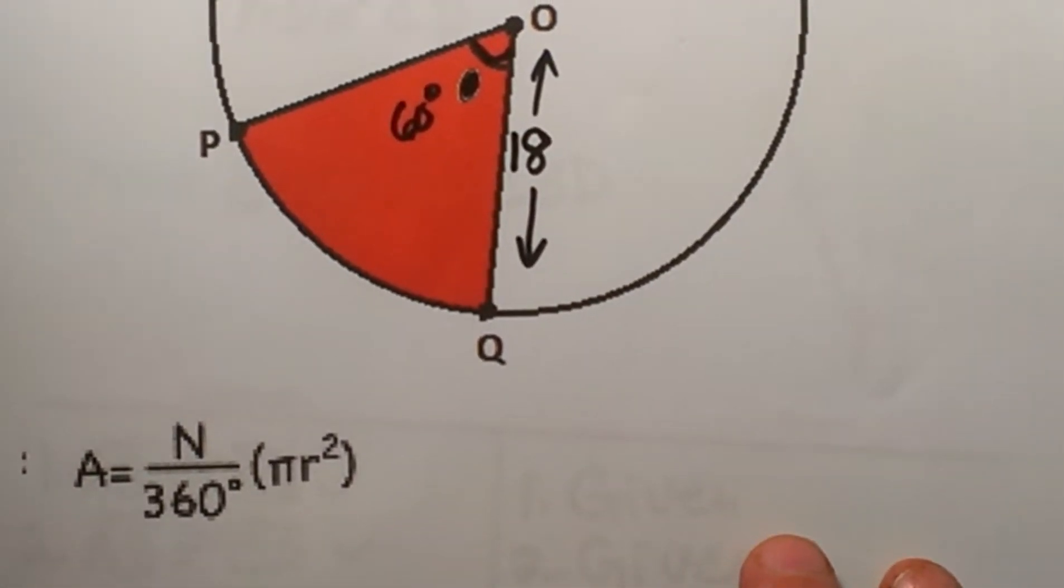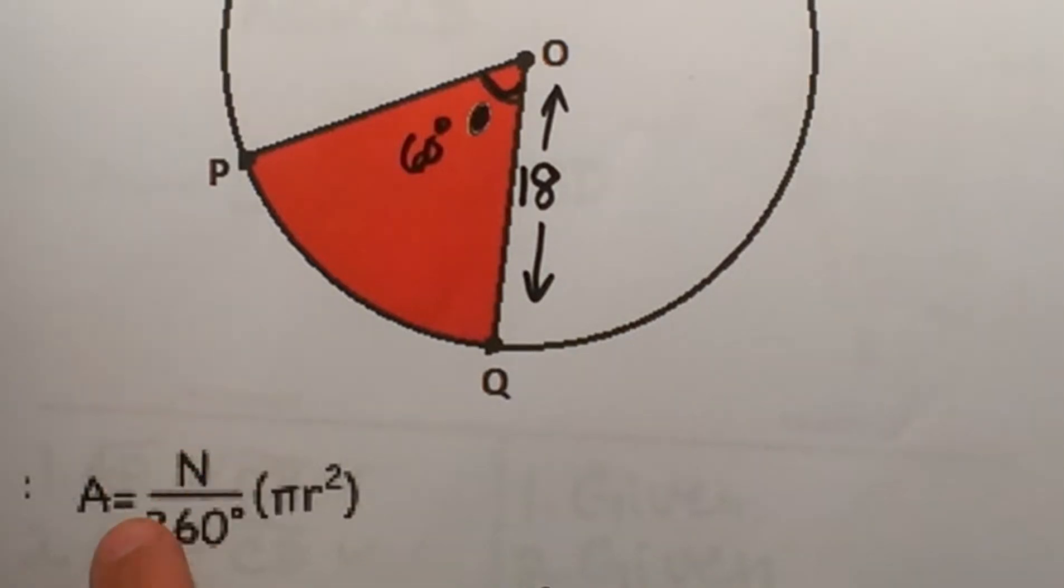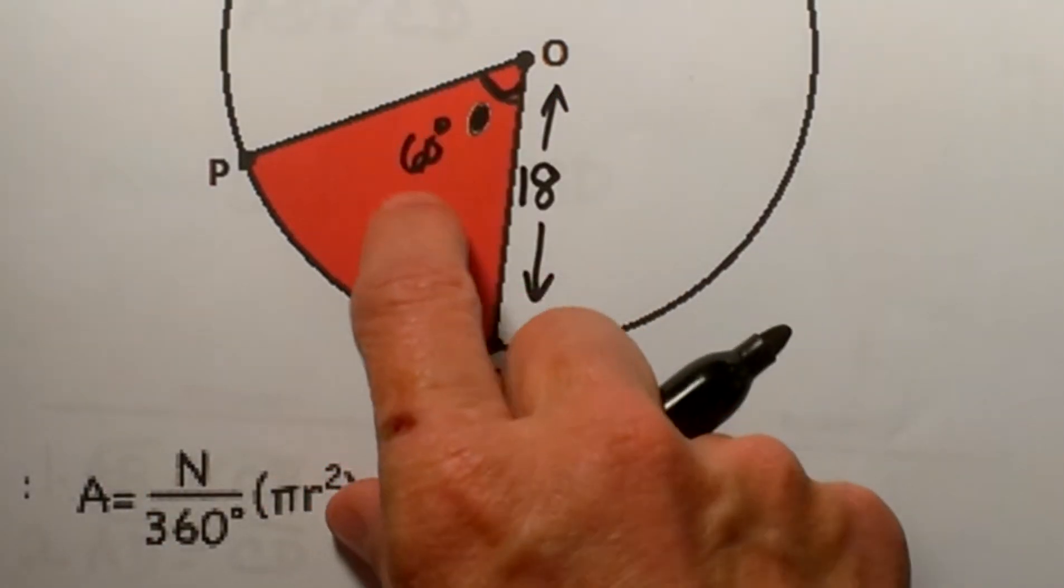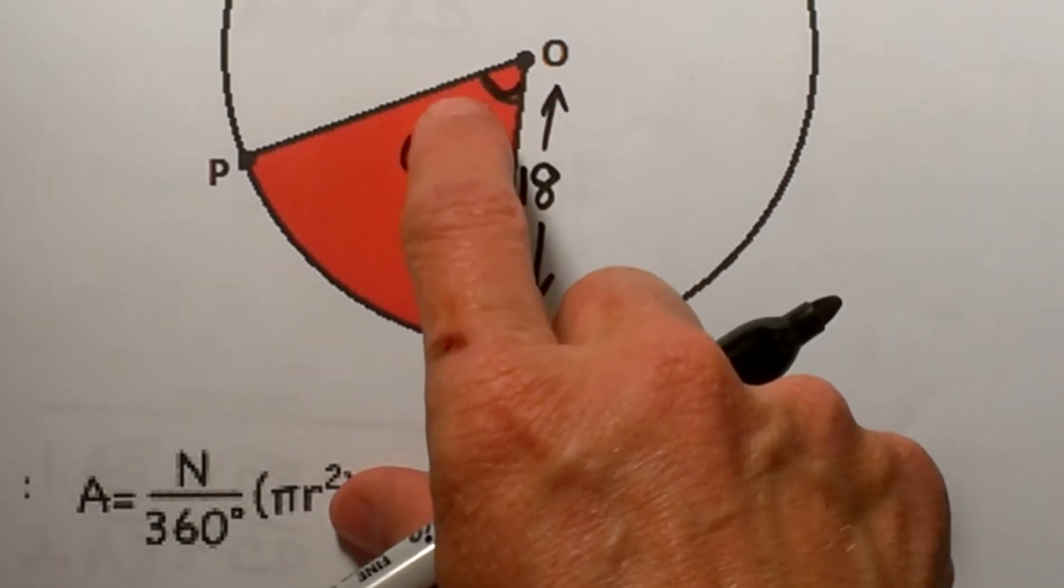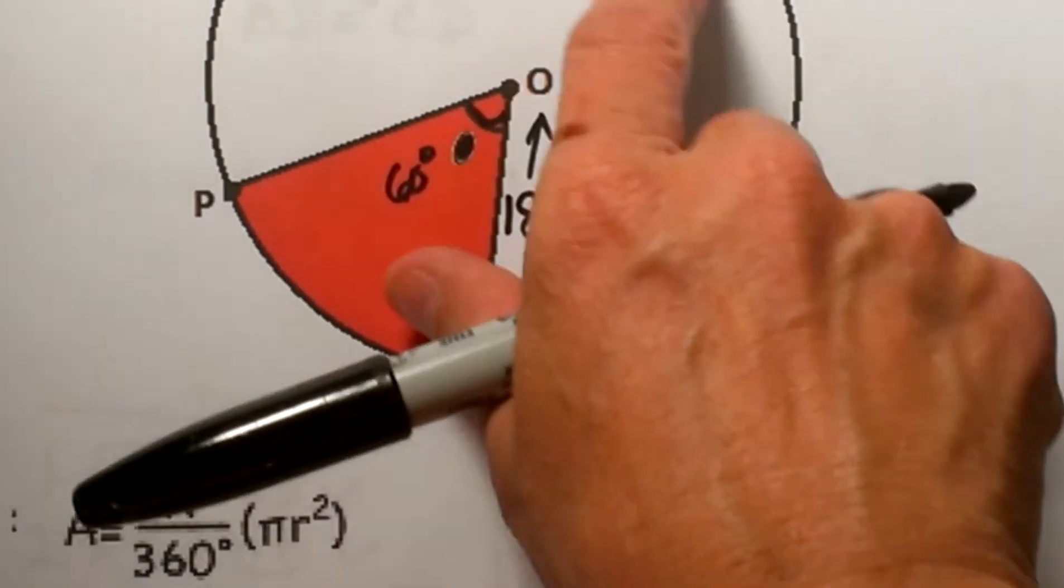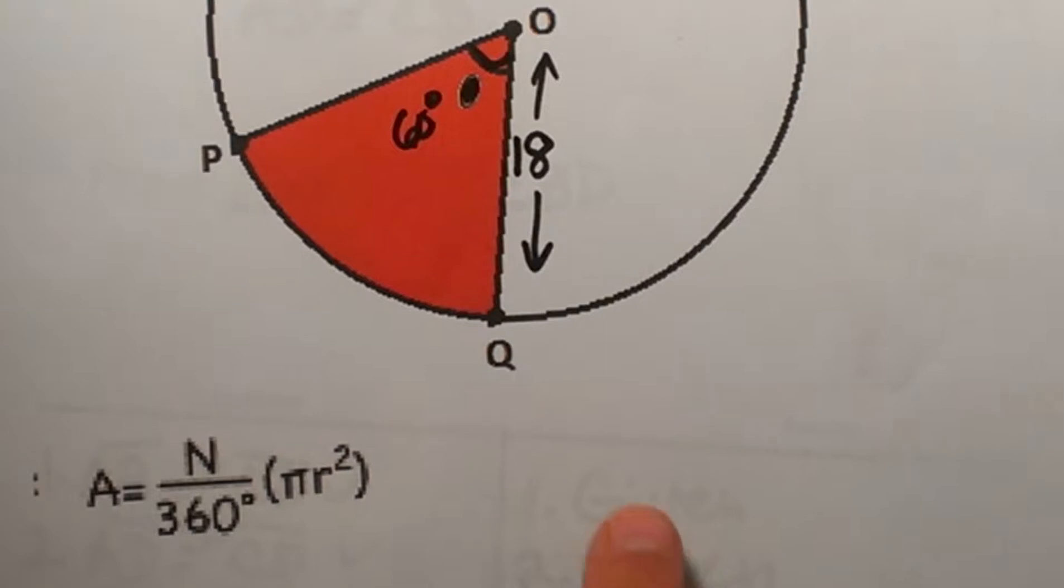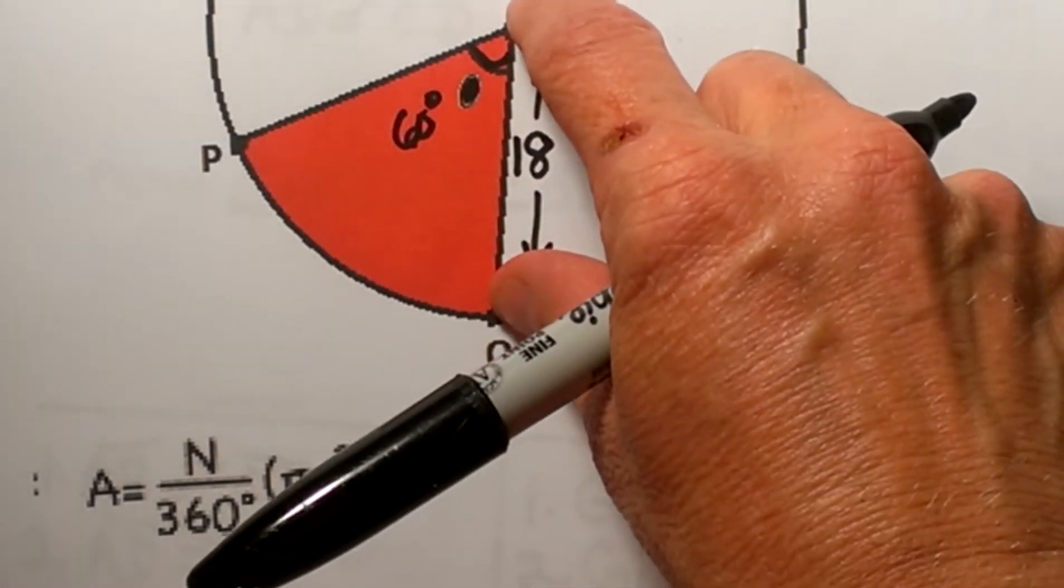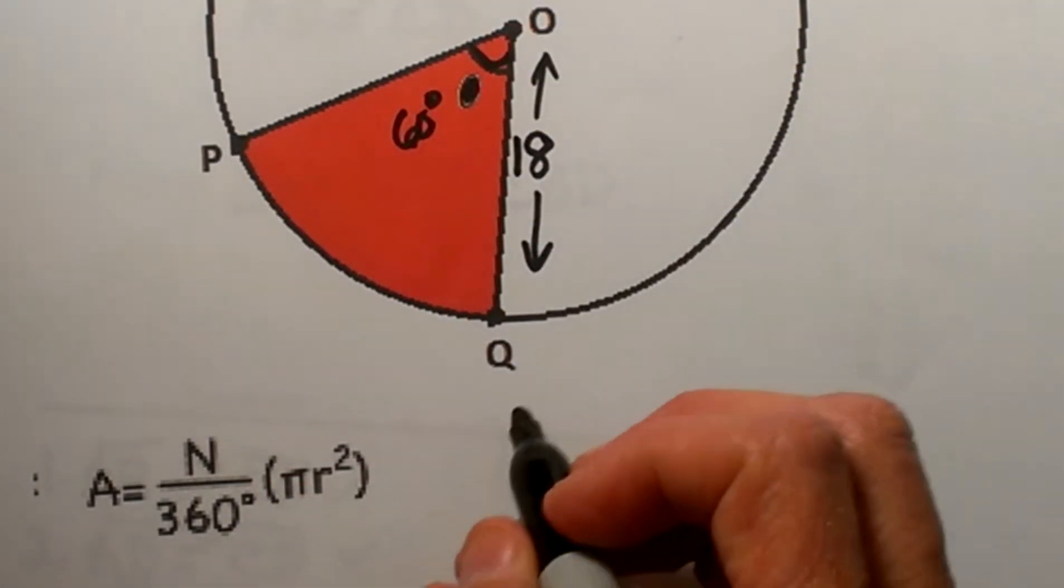So let's go down and start plugging in things. To find the area we need the angle and we need to know the radius. In this problem we see that the angle is 60 degrees. So if you think about it, that is one sixth of the circle, and then our radius is 18.